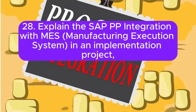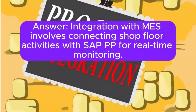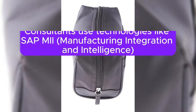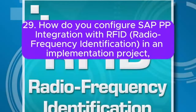Question 28: Explain the SAP PP integration with MES (Manufacturing Execution System) in an implementation project. How do you set up the system to integrate shop floor activities with SAP PP? Integration with MES involves connecting shop floor activities with SAP PP for real-time monitoring. Consultants use technologies like SAP MES (Manufacturing, Migration, and Intelligence) and configure the system to ensure seamless integration between the shop floor and SAP PP.